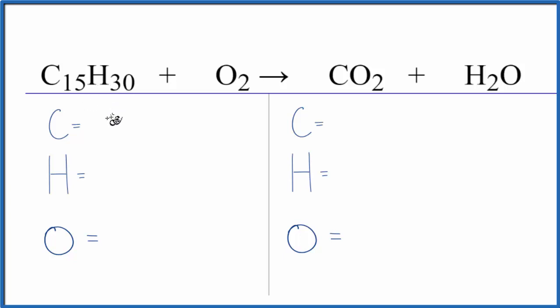Let's count the atoms up on each side. We have 15 carbons, 30 hydrogens, and then 2 oxygens.